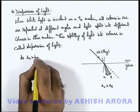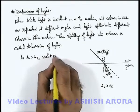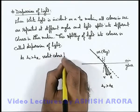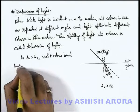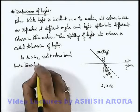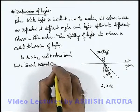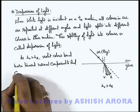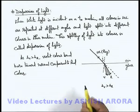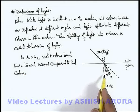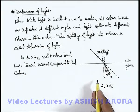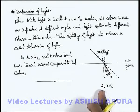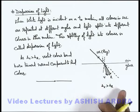As mu_v is greater than mu_r, violet color bends more toward the normal compared to red color. We can say that as the refractive index of violet color is highest among all colors, it will bend maximum. This phenomenon we call dispersion of light. Various cases related to dispersion and how dispersion produces some other phenomena — that we are going to take up in the next sections.